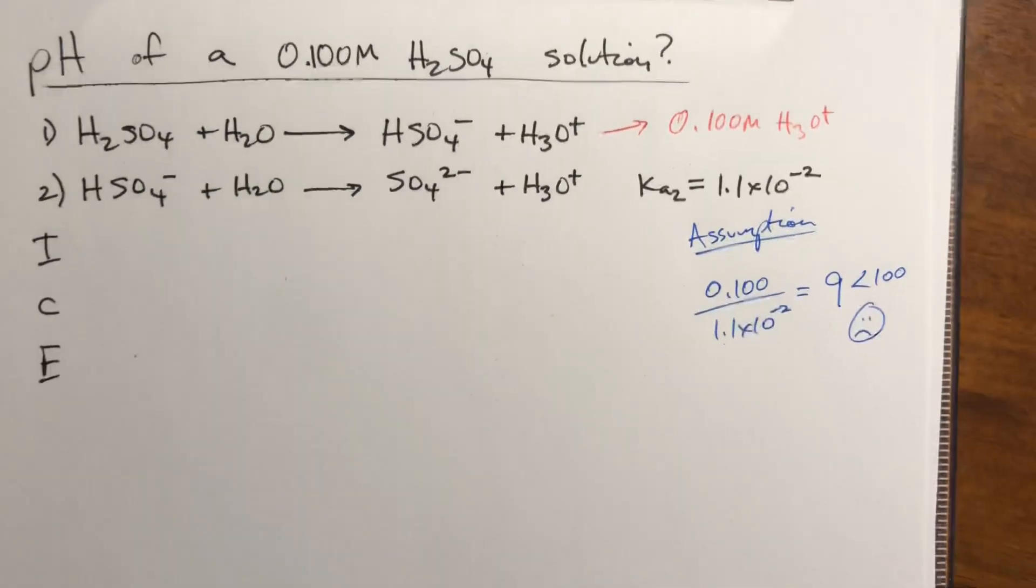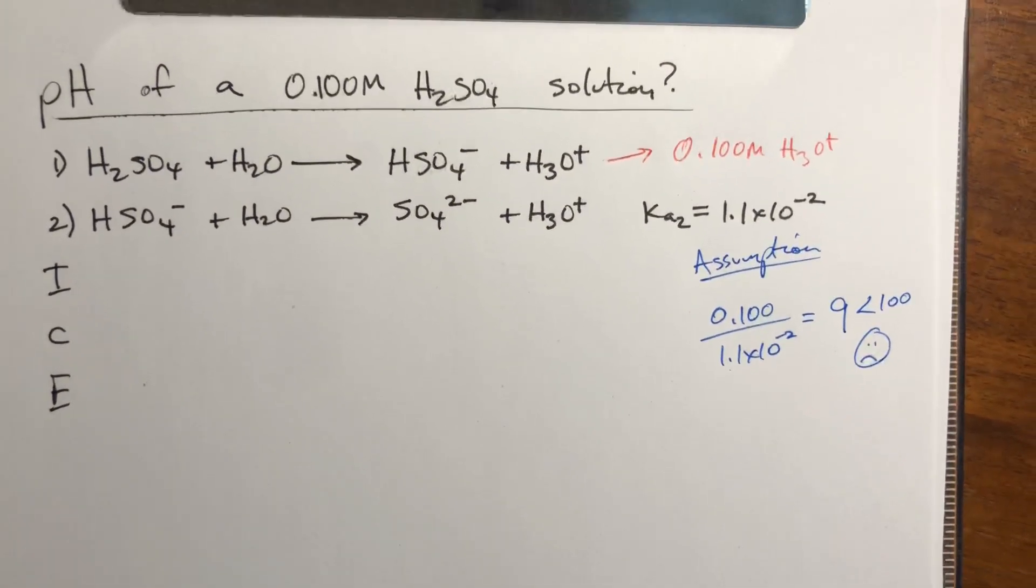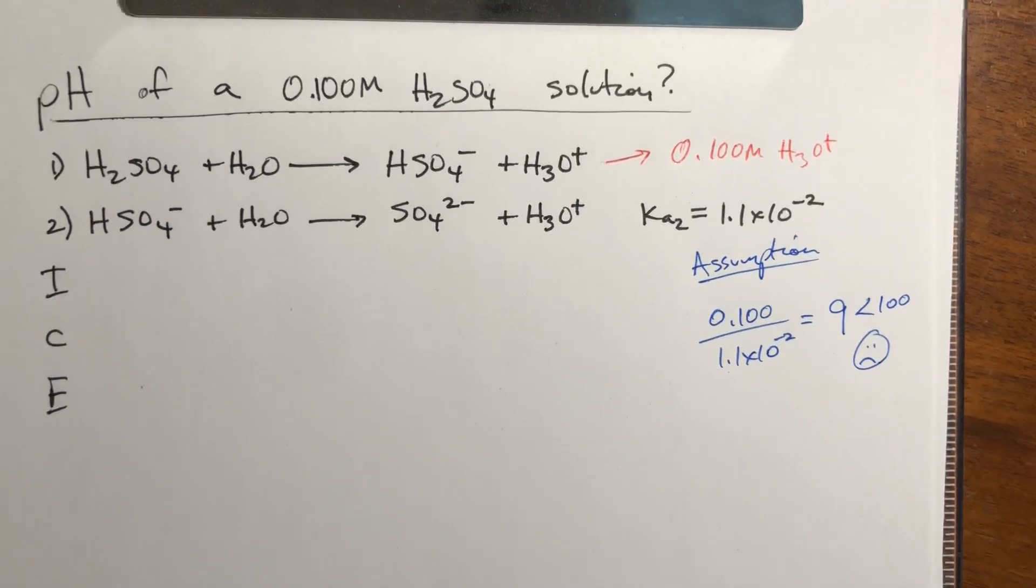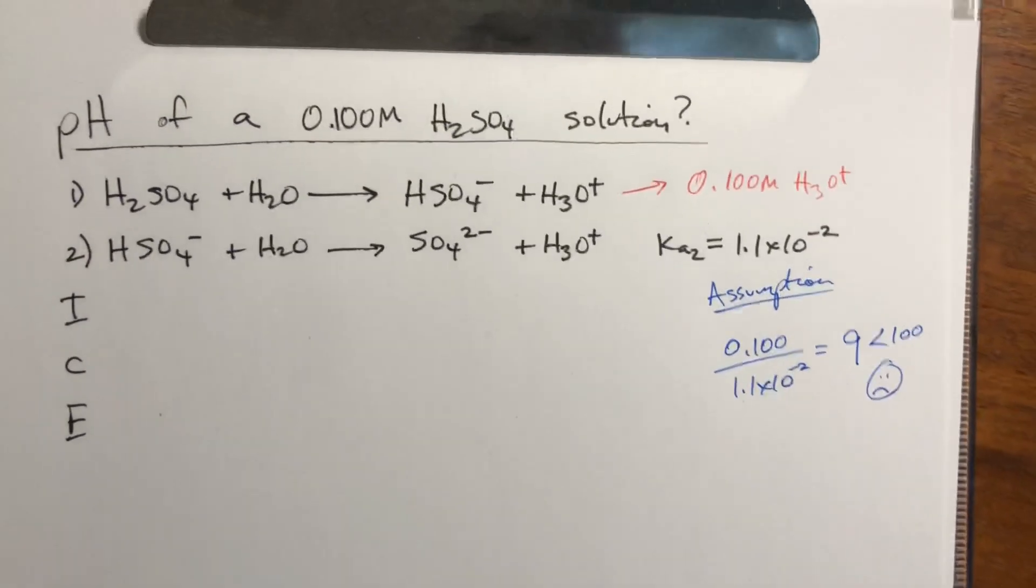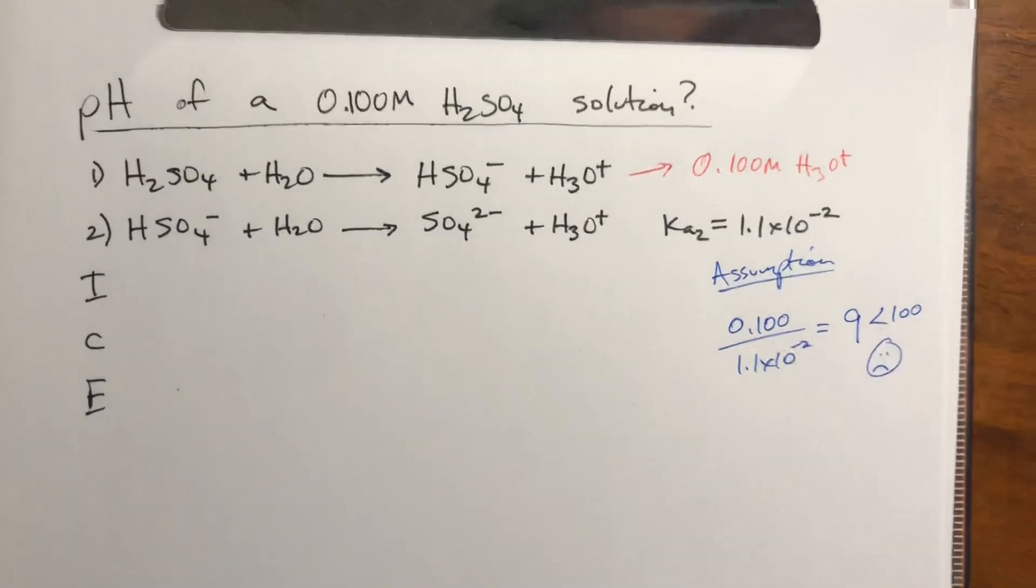I will tell you that unfortunately every value in that range, the 0.001 up to 0.5, none of them get an assumption check of over 100. So they all require the quadratic. Sorry.